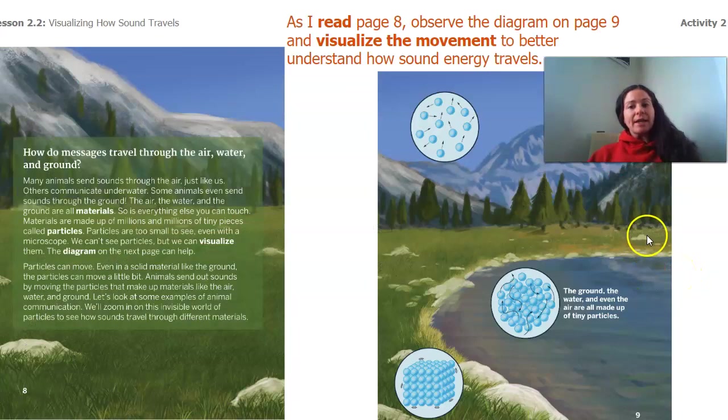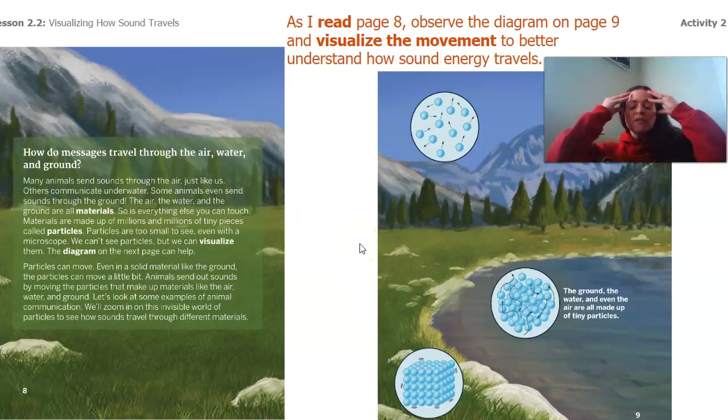I'm going to read you page eight. Page eight is on this side of the page. While I'm reading page eight, I'm going to ask you to observe the diagram on page nine. And I want you to visualize, I want you to picture in your head what the movement looks like to better understand how sound energy travels.